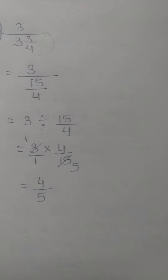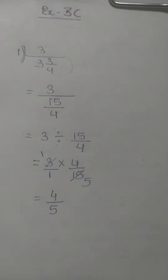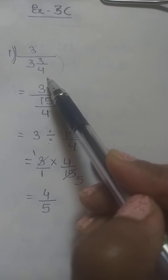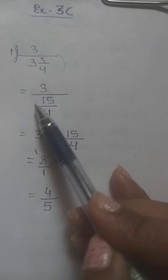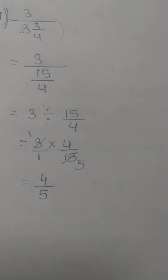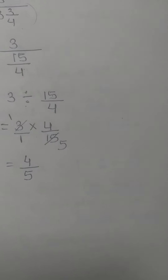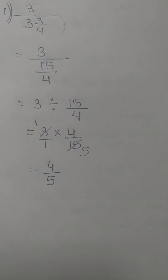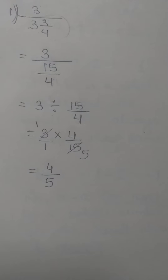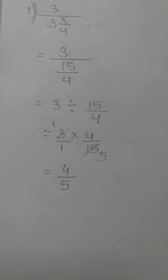If there is no number you can use 1. This is how you simplify: 3 in the numerator, 3¾ in the denominator. Keep 3 in the numerator and convert the mixed fraction to an improper fraction. Then 3 divided by 15 by 4 — convert division into multiplication, so 15 by 4 becomes 4 by 15. Do cancellations, then multiply numerator to numerator and denominator to denominator. The answer is 4 by 5.